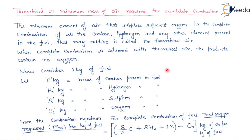1 kg of carbon reacting with oxygen forms CO₂, and 1 kg of carbon requires 8/3 kg of oxygen for complete combustion — this was covered in the previous lecture. So C kg of carbon requires 8/3 × C kg of oxygen. In the same way, I have written 8/3 × C + 8H₂ + 1 × S for the total oxygen required.